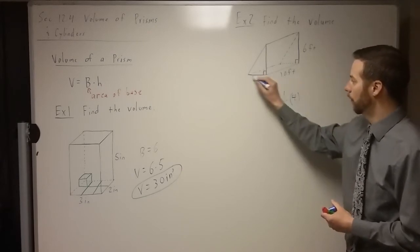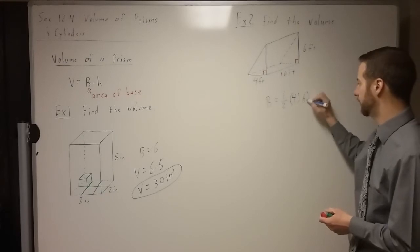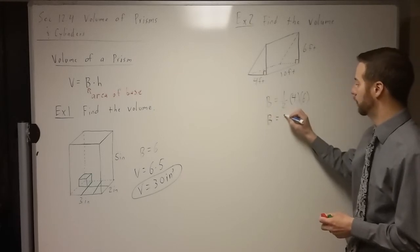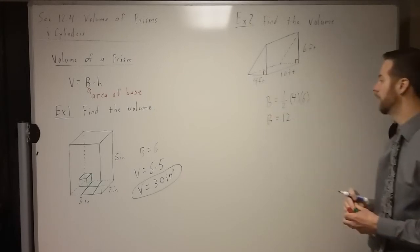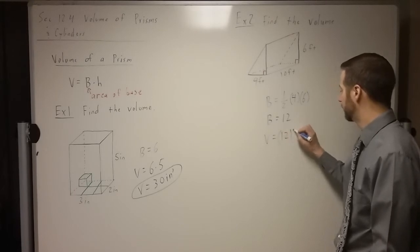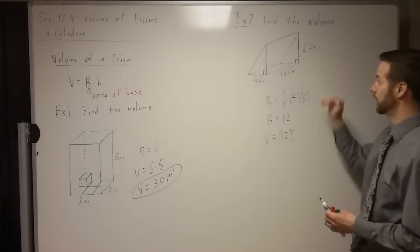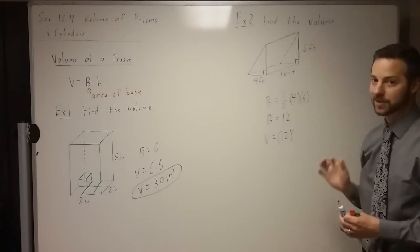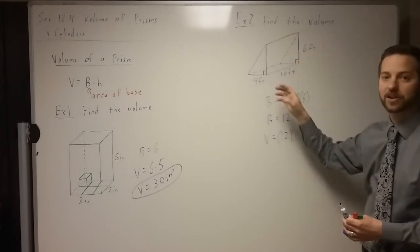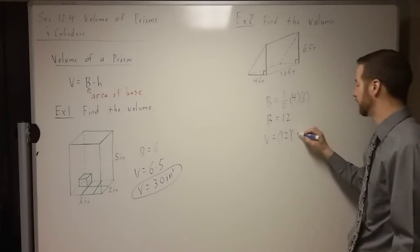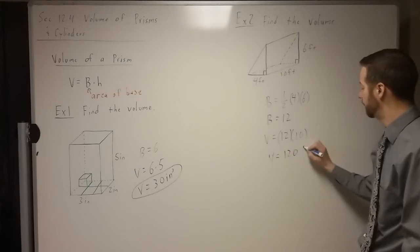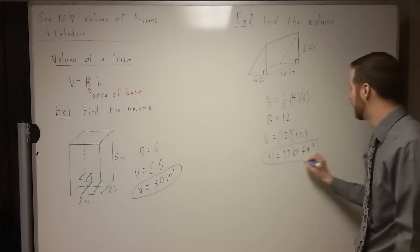The area of a triangle is one half times the base of the triangle times the height of the triangle. The base of the triangle is 4 and the height is 6. So doing the math: one half times 4 times 6 is 24, and half of 24 is 12. The area of the base is 12. Then the volume is the area of the base times the height. Now remember — height doesn't always go vertical. Height is the distance between the two bases. My bases are the two triangles, which means my height is the 10 feet — the distance from one base to the other. So my volume is 12 times 10, which is 120 cubic feet.